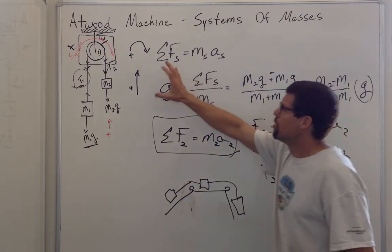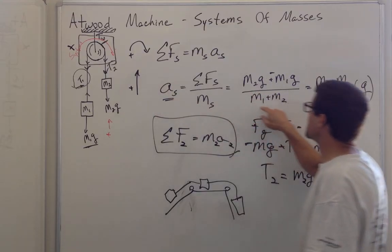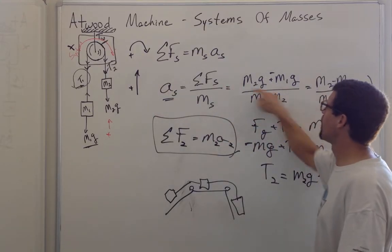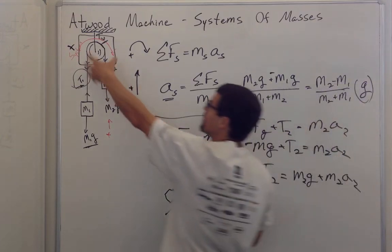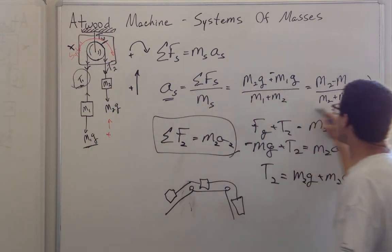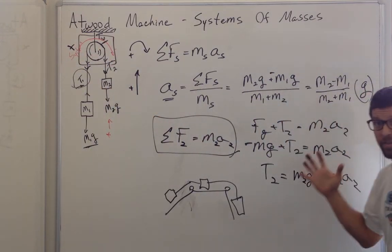And so solving this as a system of masses where you take the total sum of the forces on the system in some given direction and divide it by the mass of the system may be much simpler.